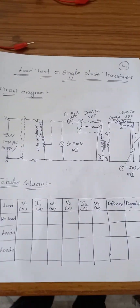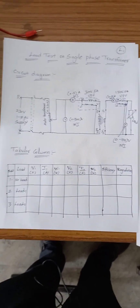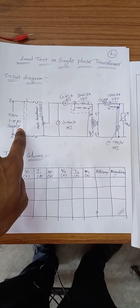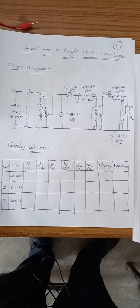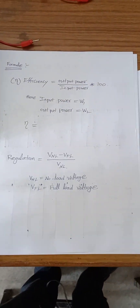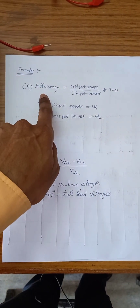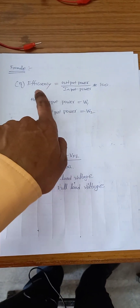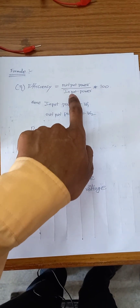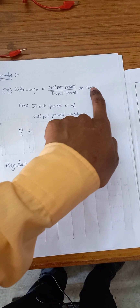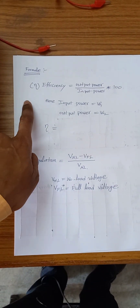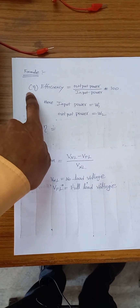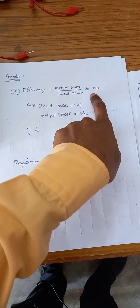The same diagram I have drawn here, and this is the tabular column. We need to calculate three major values: efficiency and regulation. Efficiency is output power divided by input power, multiplied by 100. We multiply by 100 because efficiency is always calculated as a percentage.